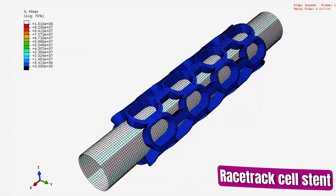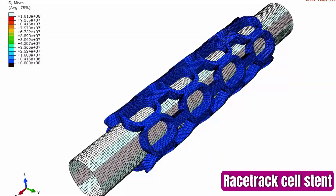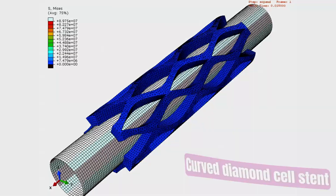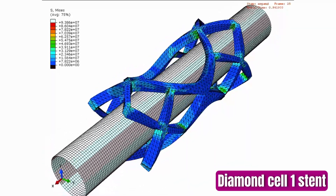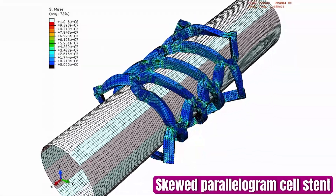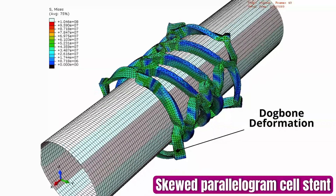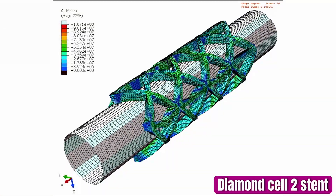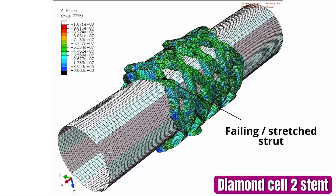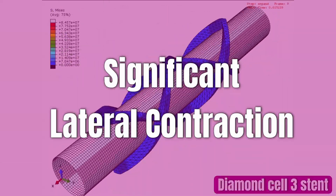In terms of virtual simulation results from running the simulations on these 3D-printed bioresorbable stents: the racetrack model shows the right kind of deformation profile. The curved diamond cell stent and diamond cell stent also show appropriate behavior. However, the skewed parallelogram stent does not show the right deformation — the edges exhibit a dog-bone deformation pattern. In another diamond cell variant, strut failure is observed. A further design shows excessive lateral contraction, which is also not acceptable.